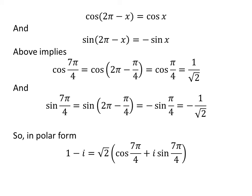The polar form of complex number 1 minus i is square root of 2 times cosine of 7 times pi upon 4 plus i times sine of 7 times pi upon 4.